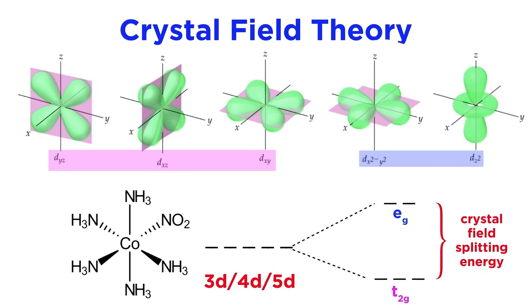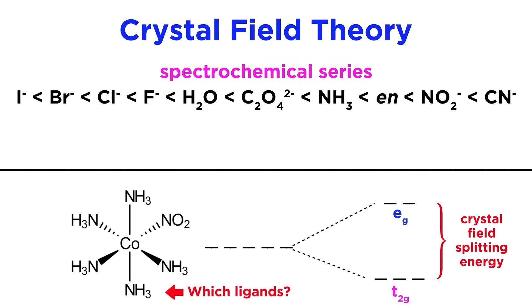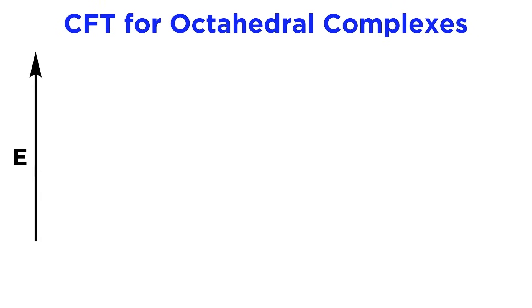The magnitude of this energy gap will depend on whether the orbitals involved are 3d, 4d, or 5d orbitals, as well as the identity of the ligands themselves, with the impact following this trend here, called the spectrochemical series. On the left we have weak field ligands, and on the right, strong field ligands. Let's put this into context.